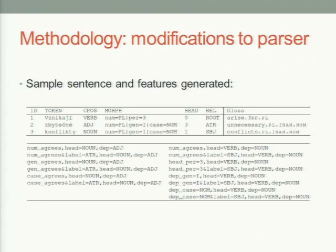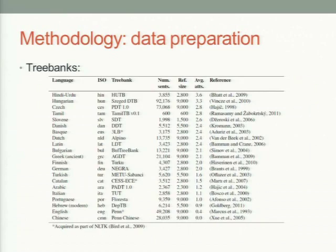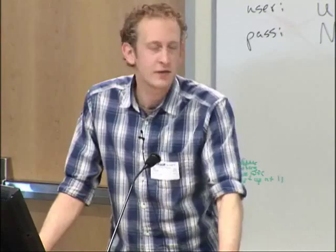Here's a sample sentence in Czech and the list of features we generate — agreement features whenever two tokens agree and asymmetric features when they don't. This is the list of tree banks we collected. There's a range: Hindi-Urdu has an average of 3.6 morphological attributes per token. We included the Penn Chinese Tree Bank as a reminder that there's a whole set of languages with essentially no morphological information. There's a range in between.